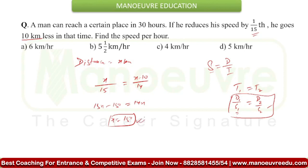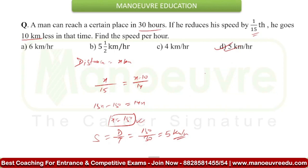So what is x? The distance covered by a man is 150 km. So what is speed? Speed is equal to distance upon time. The distance is 150 km and the time taken is 30 hours. When you solve it, you will get 5 km per hour as the speed of the man.